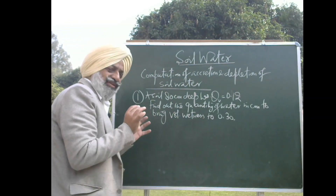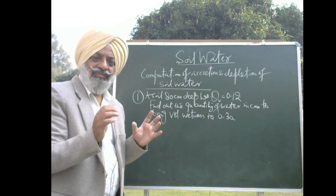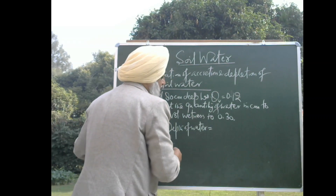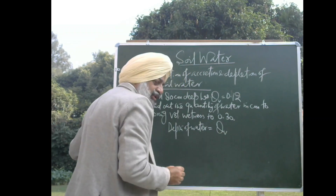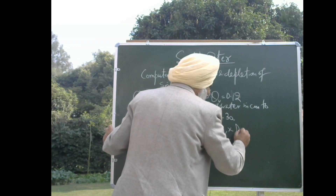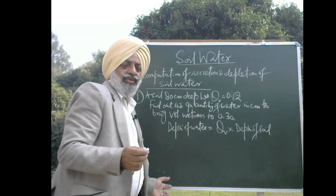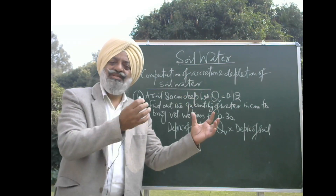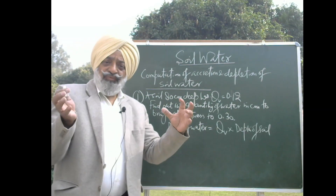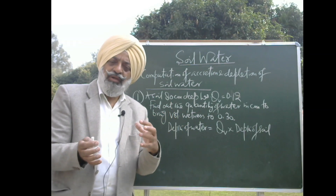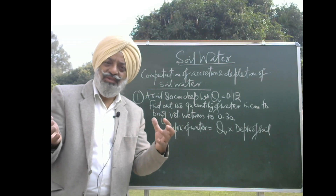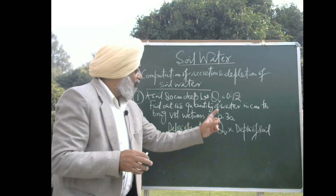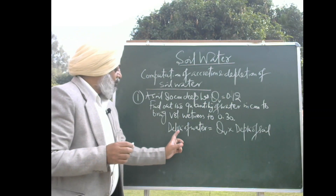For this, a simple formula: the depth of water is equal to volumetric water content multiplied by depth of soil. This relationship is used to convert wetness percentage into the amount of water present in the soil in centimeter units. Once you have the water content in centimeter units, you can find out the volume of water present in the soil in cubic meters or liters.